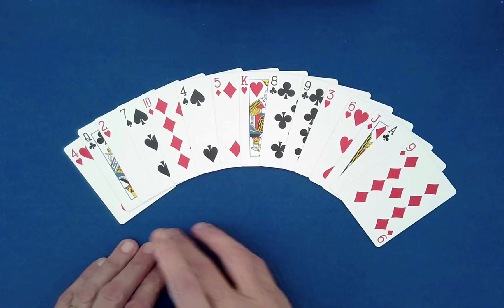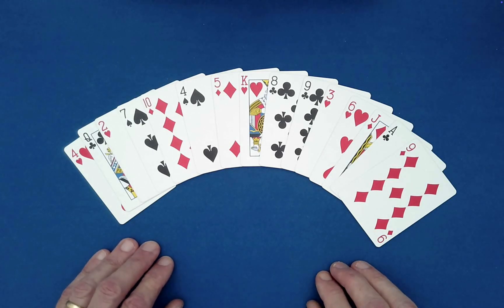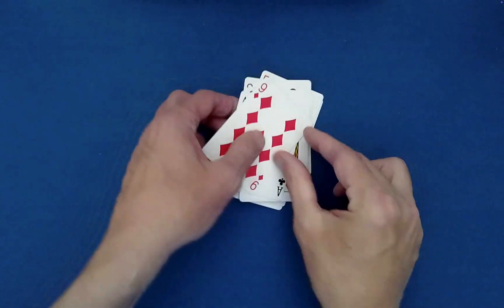So as you can see here, I have a good selection of card values, suits and colors. I believe there are 15 cards here. So we'll go ahead and gather these.